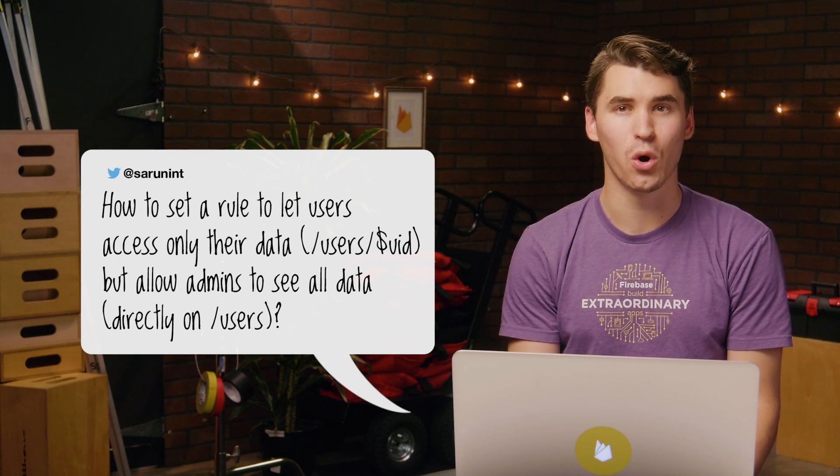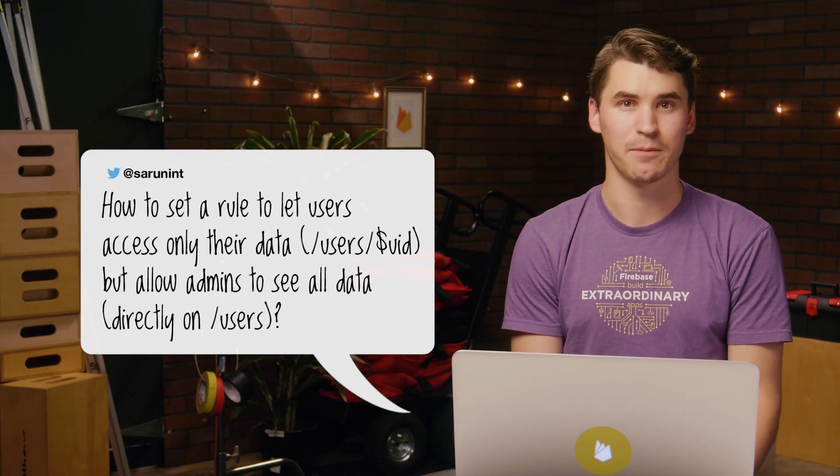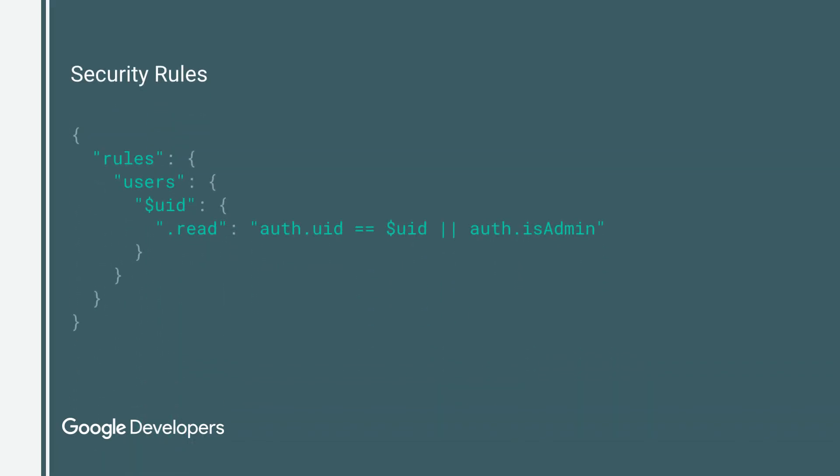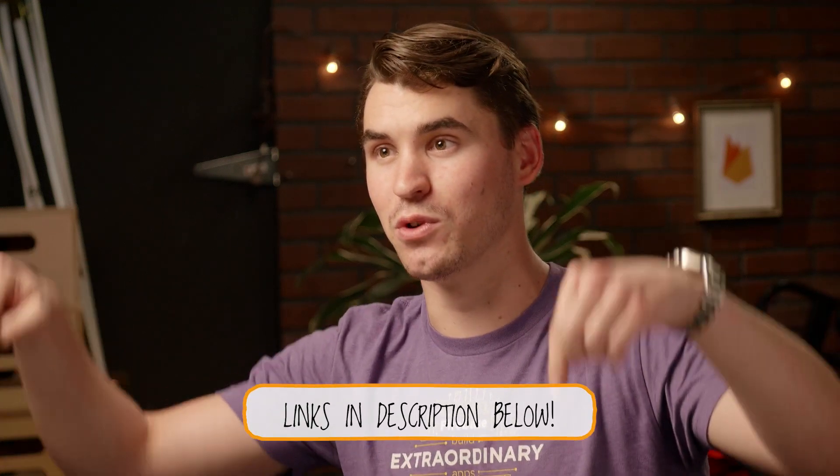We've had a number of questions on security this week. Sarun on Twitter asks, how to set a rule to let users access only their data but allow admins to see all data? Great question, Sarun. In your database security rules, you can write read rules that and or or different security expressions together. For instance, one expression can allow a user to access her data, and another expression can allow all admins to access everyone's data. You can or those two expressions and get the rule that you want. If you want to learn more, take a look at our database security rules doc linked in the description below. Thanks, Sarun.